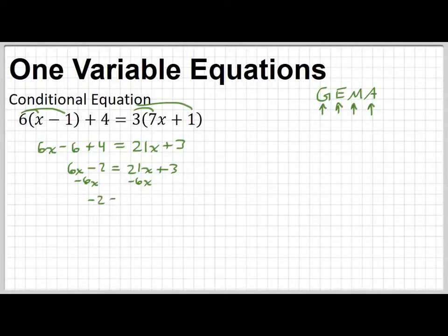On the right side, I go 21 minus 6, that would be 15x. Add the 3.